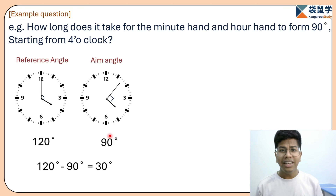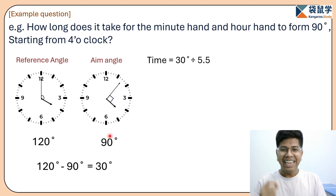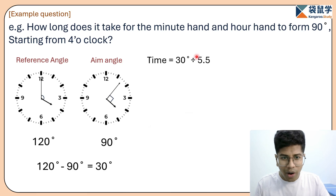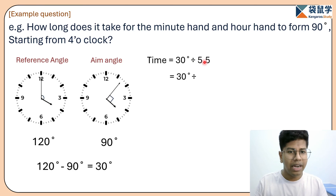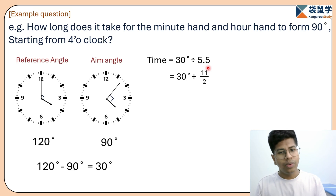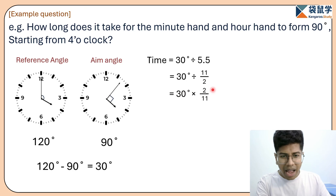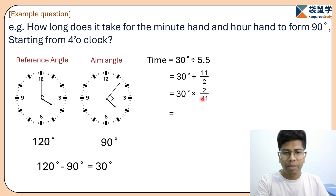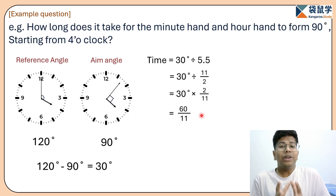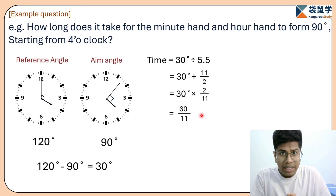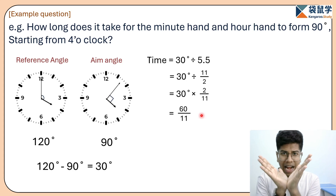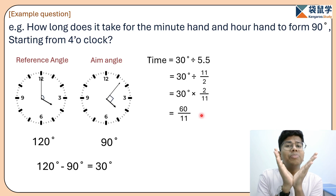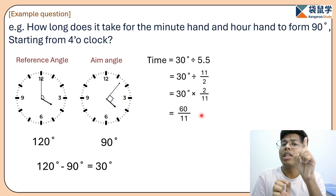Every minute the minute hand catches the hour hand at 5.5 degrees per minute, but we need to achieve 30 degrees. So we calculate 30 divided by 5.5. Converting to a fraction: 30 divided by 5.5 becomes 30 divided by 11/2, which is 30 multiplied by 2 over 11, giving 60 over 11 minutes. So it takes 60/11 minutes for the minute hand to form a 90-degree angle with the hour hand. We use the catching speed since both hands move simultaneously.